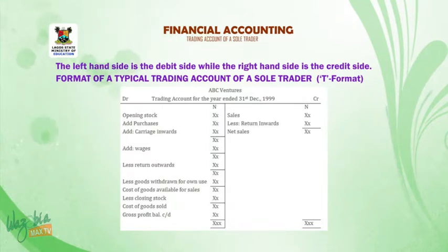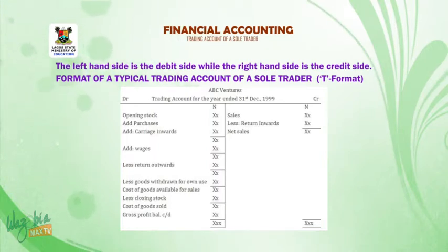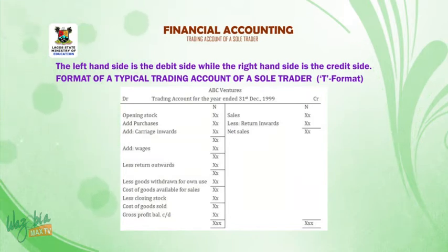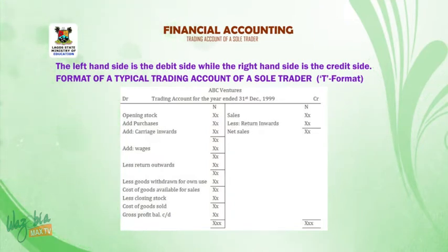On the left hand side, we have our opening stock. We are going to add purchases to it, then add carriage inwards, and we will get a subtotal. Thereafter, we add wages to get another subtotal. We will then less return outwards to get another subtotal. We will now less goods withdrawn for own use, and we will get another subtotal titled cost of goods available for sale.